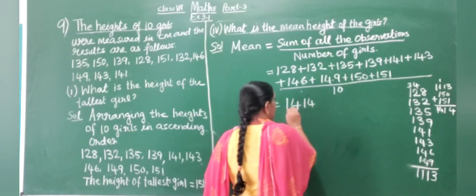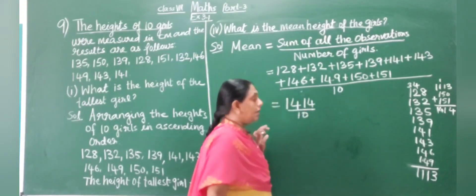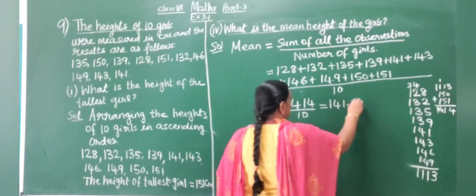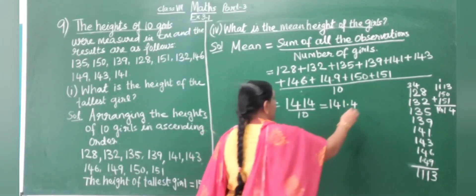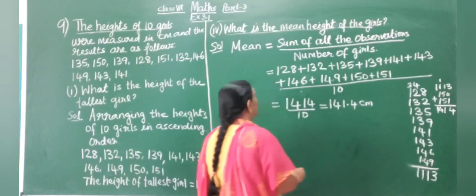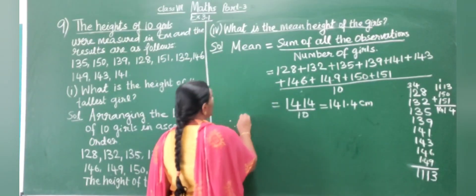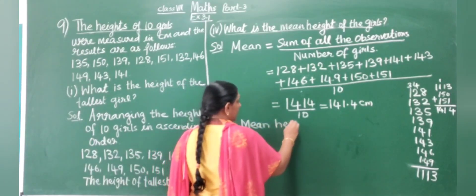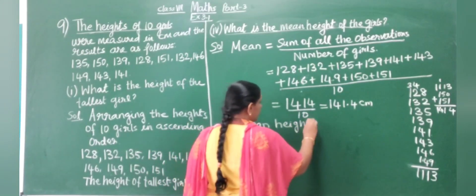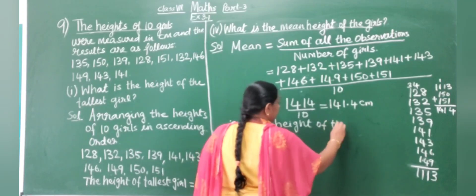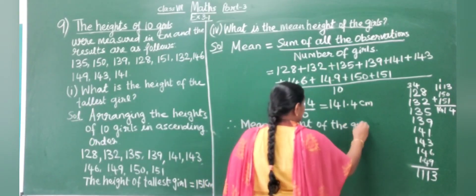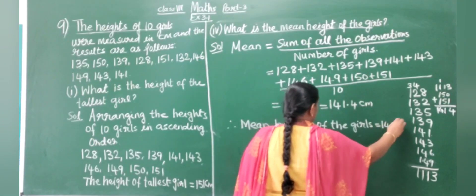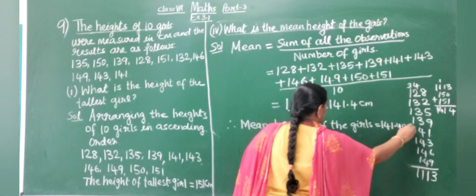Dividing 1,440 by 10 gives 144. So the mean height of the girls is 141.4 centimetres.